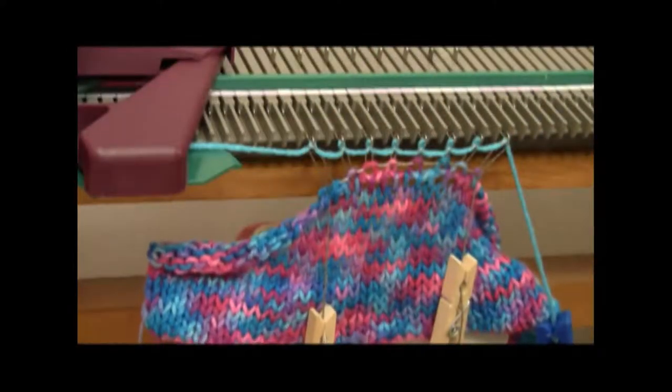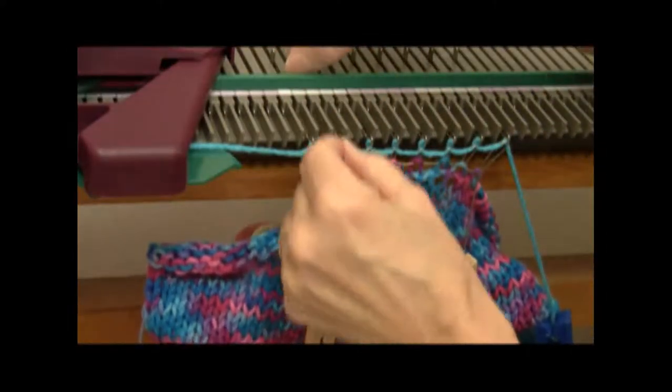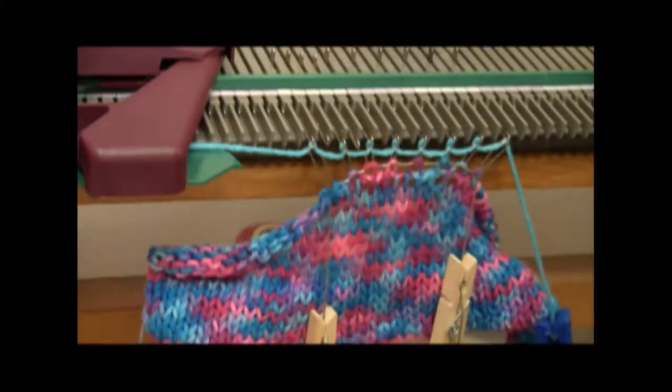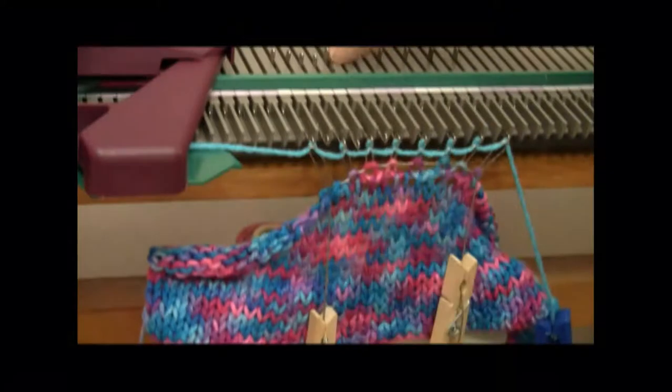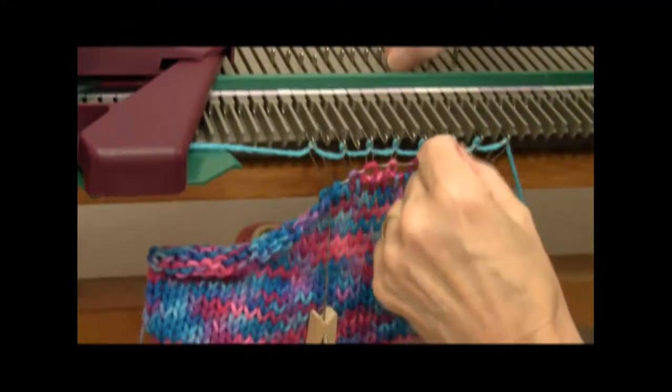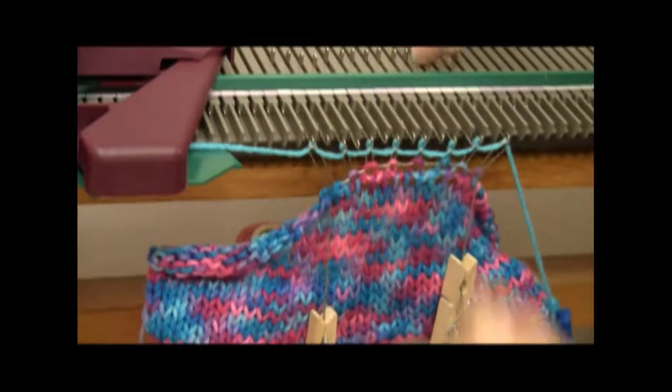Then complete the cast-on by bringing out the in-between needles, and one by one make sure that the latches are open. And now you're going to knit 14 rows.